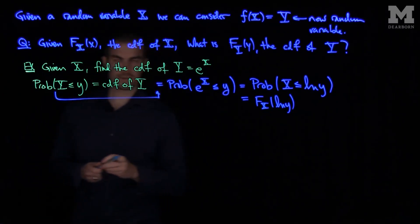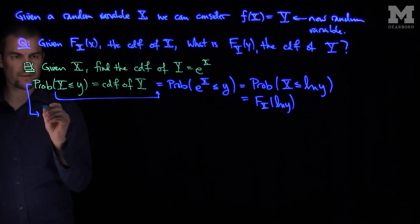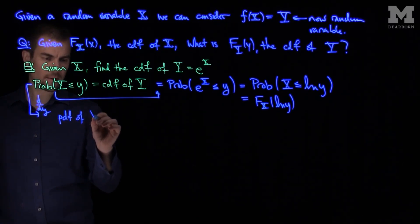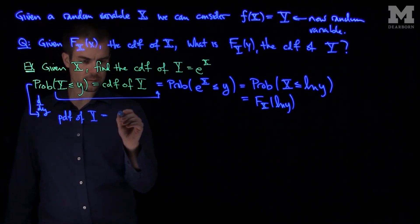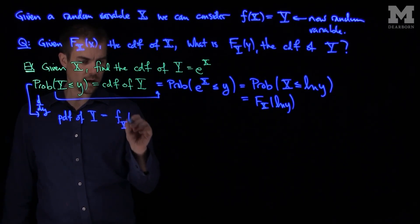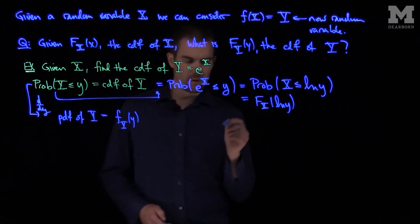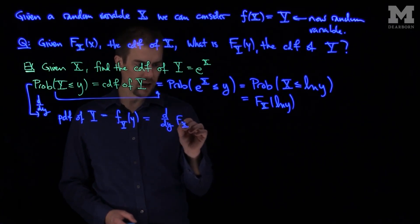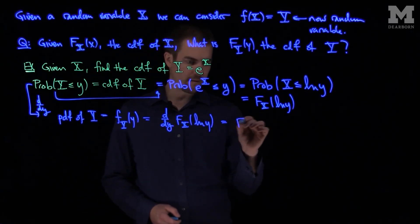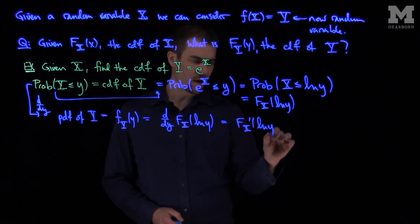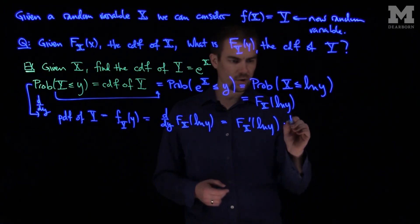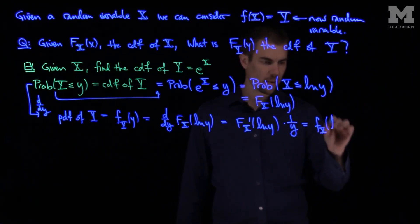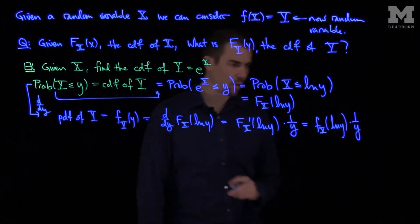Now if we want to find the PDF, we take the derivative with respect to y. So d/dy of F_Y(y) gives us the PDF of Y, which we call f_Y(y). That equals d/dy of F_X(ln y), which by the chain rule is F_X prime evaluated at ln(y) times the derivative of the inside function, which is 1/y. So the PDF of Y is f_X(ln y) times 1/y.